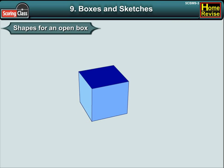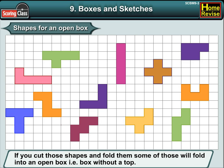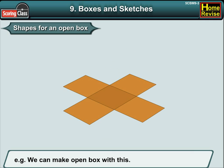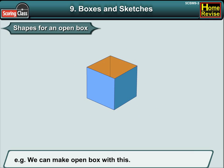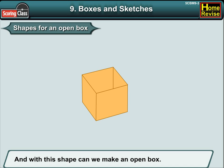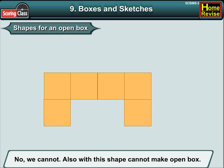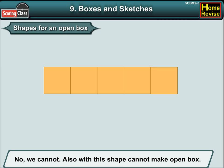Shapes for an open box: remember the puzzle with five squares in chapter 3? You saw 12 different shapes made with five squares. If you cut those shapes and fold them, some of those will fold into an open box — that is, a box without a top. For example, we can make an open box with this shape, and with this shape. But with this shape, we cannot make an open box.